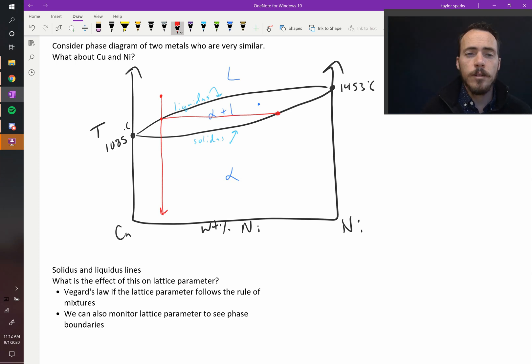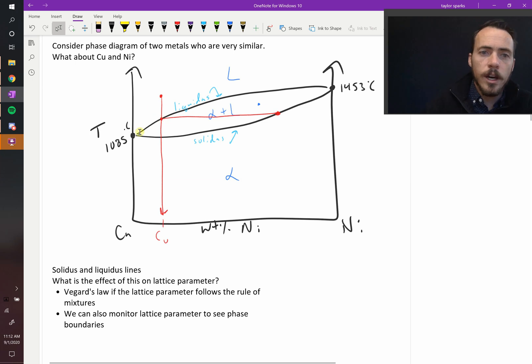So when it's cooling down, its initial composition, C0, whatever this is over here, is mostly copper. But you see that the very first time that we start forming a solid, it's actually mostly nickel. It's on this side of the phase diagram. So we're going to form something that's mostly nickel, and the liquid is going to become increasingly deficient in nickel as we move down.